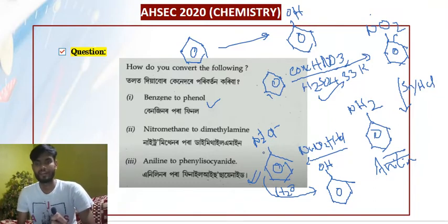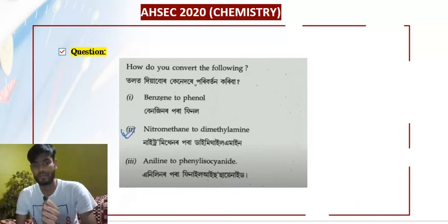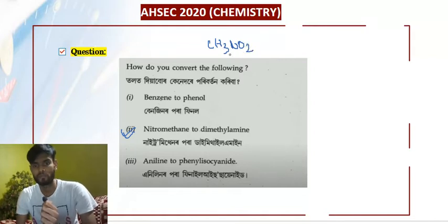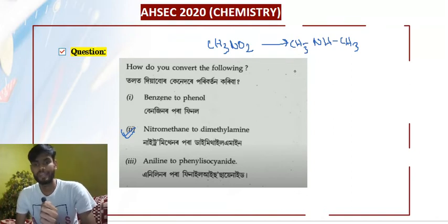Now we are moving to the next question. Number two: nitromethane to dimethylamine. This is important. Nitromethane — CH3NO2 — conversion to dimethylamine. Dimethylamine has the structure NH with two CH3 groups — that is, a secondary amine. So first of all, what do you do? This is nitromethane, CH3NO2.